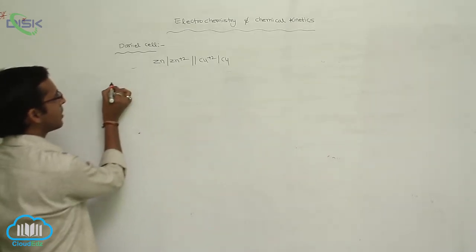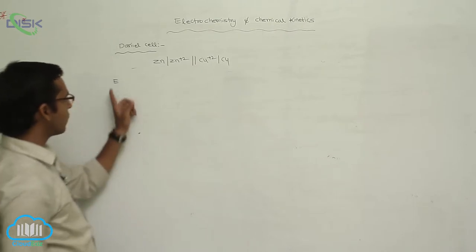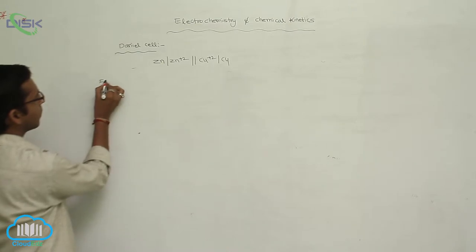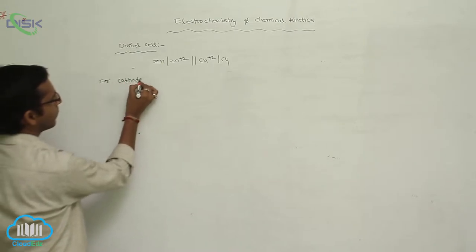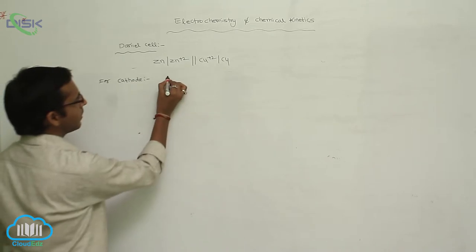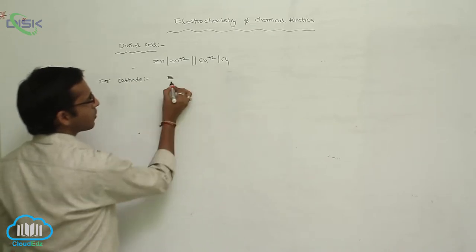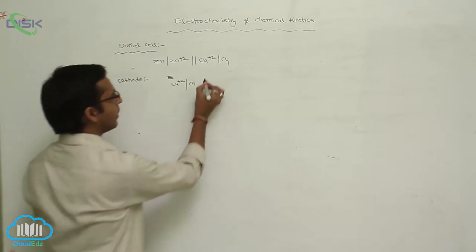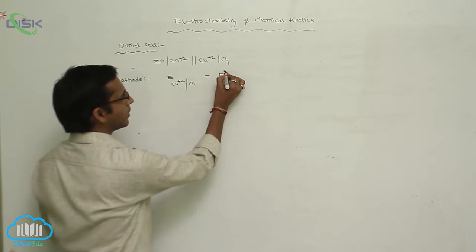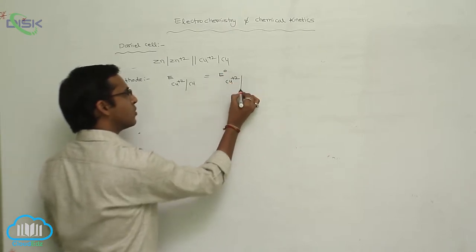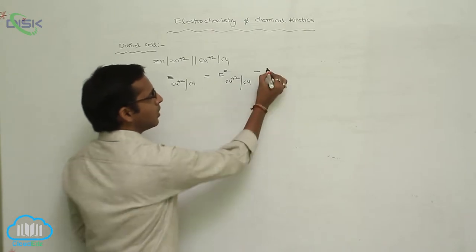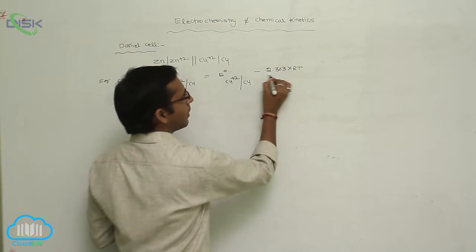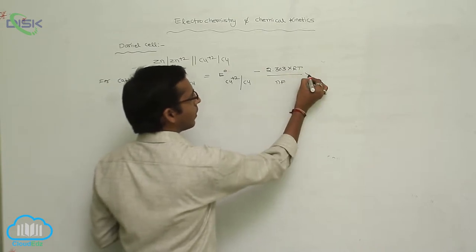By using the Nernst equation, the Nernst equation for standard reduction potential for cathode: E_cell equals E⁰ — metal ion vertical line metal — minus 2.303 into RT by NF into log.